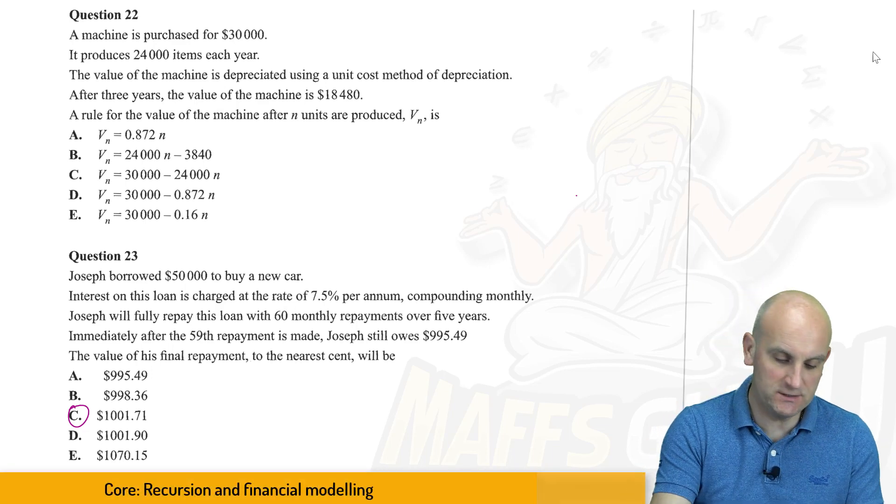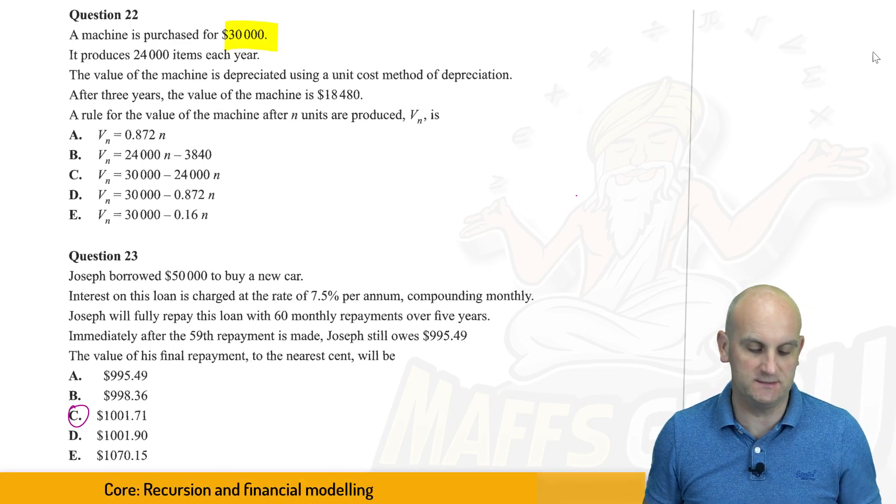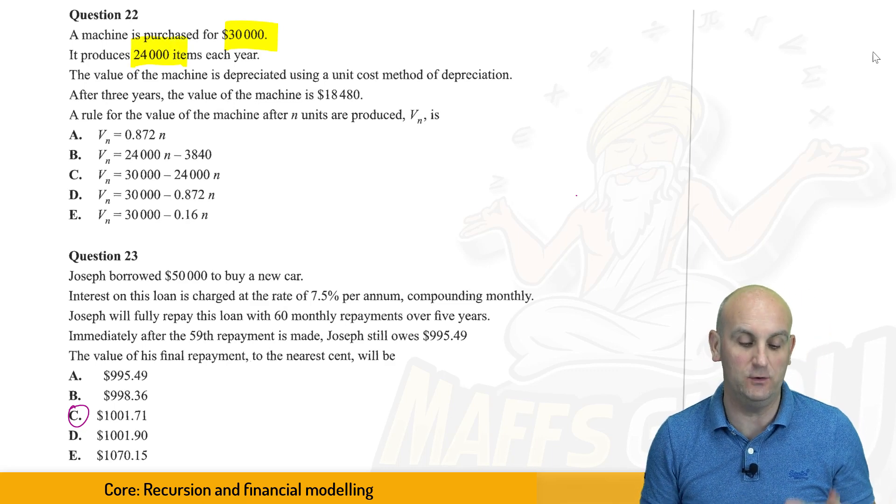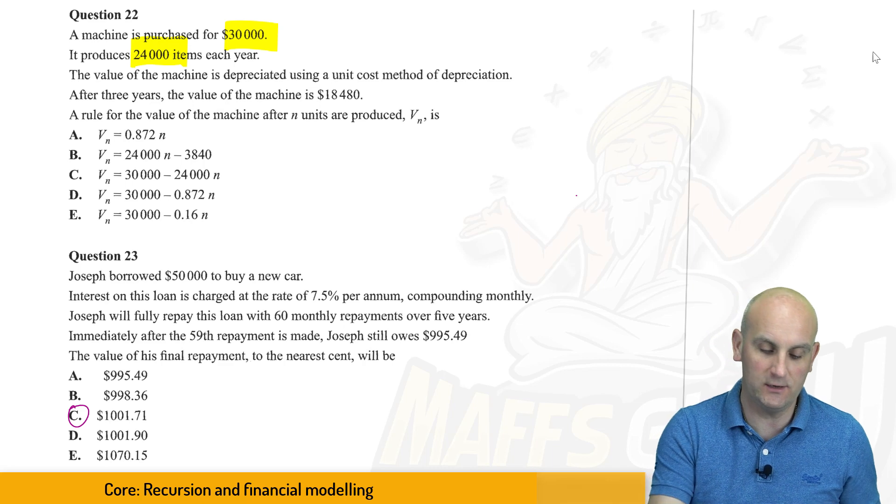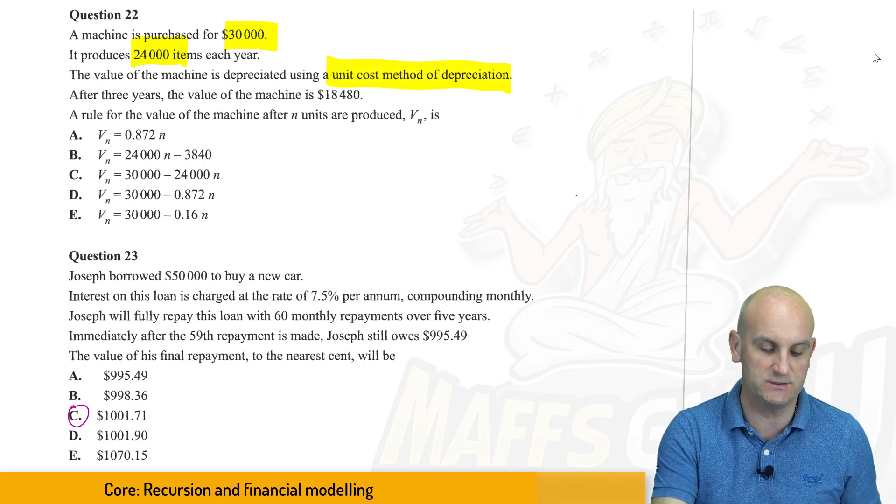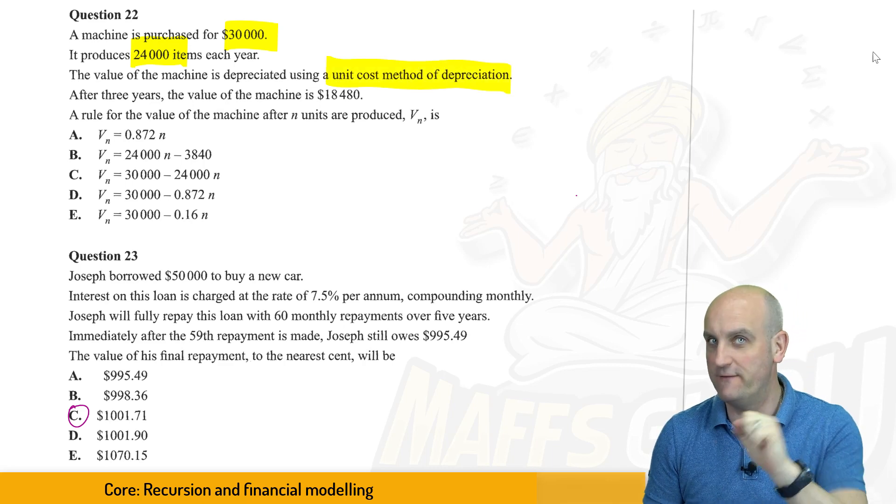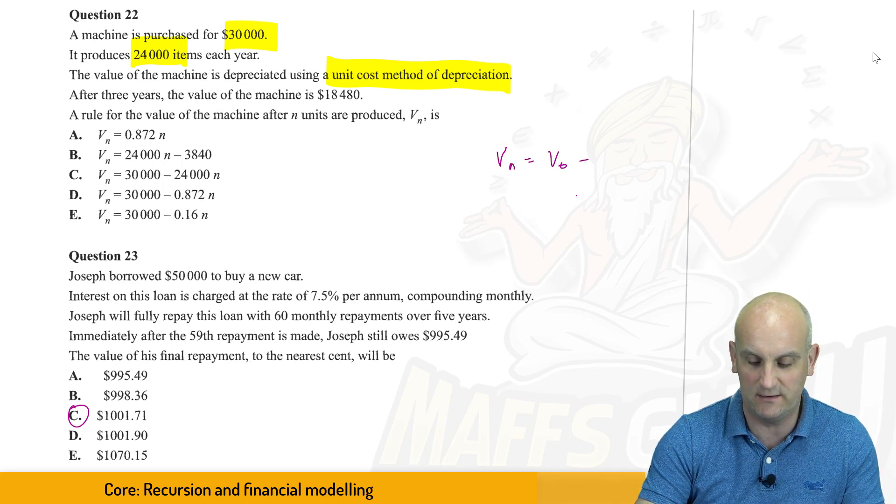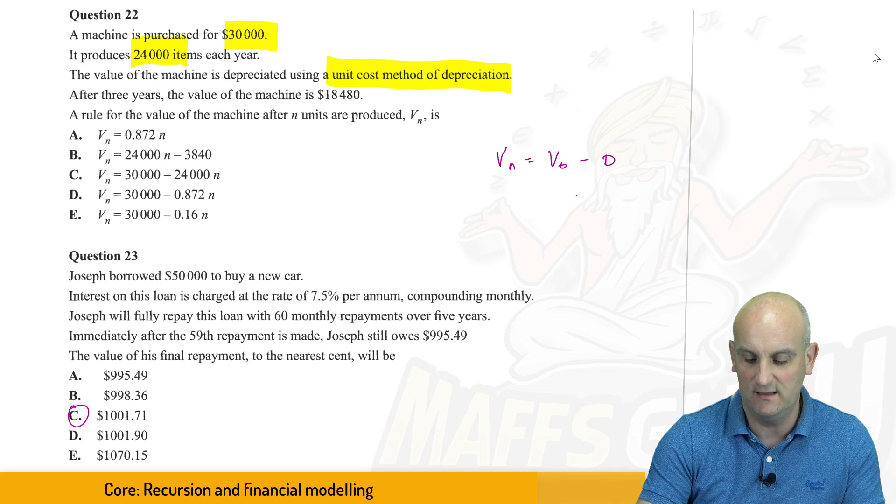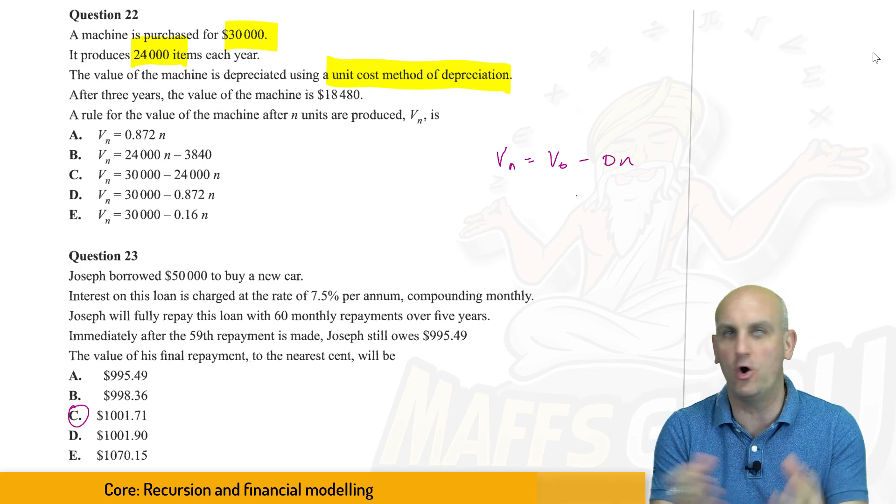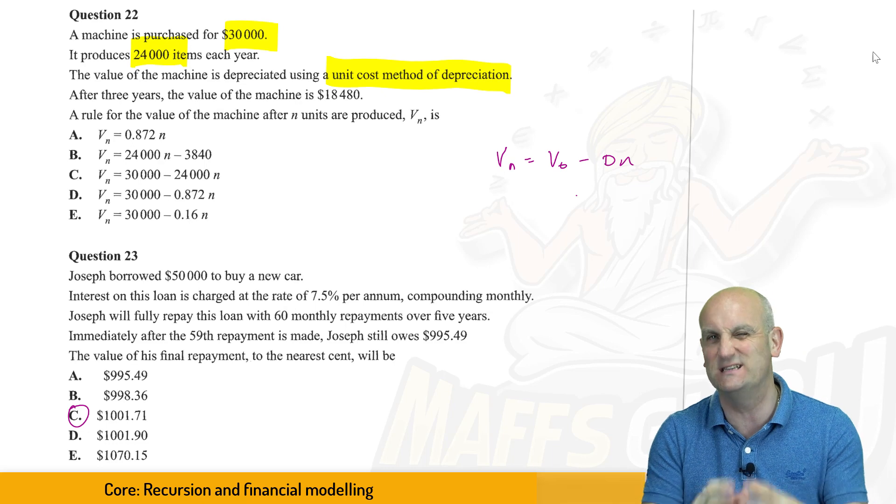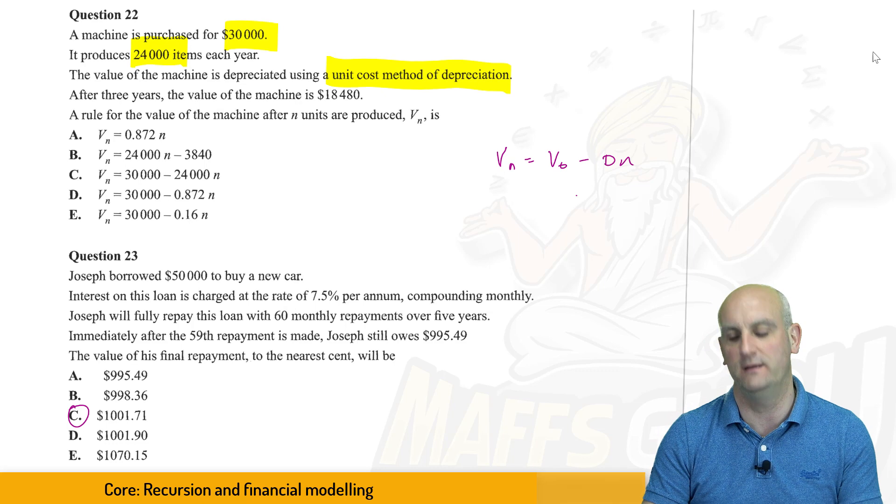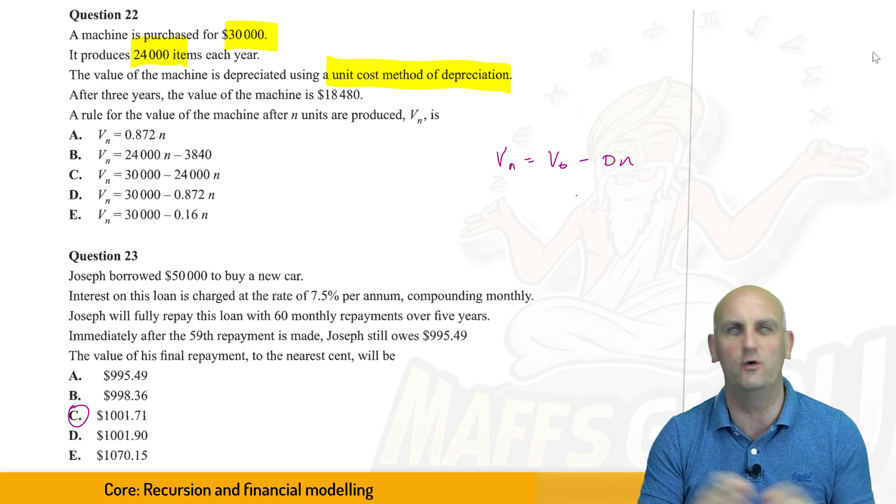Okay, question 22. A machine is purchased for $30,000. It produces 24,000 items each year and the value of the machine is depreciated using a unit cost method of depreciation. So I already have an idea that my formula is going to be something along the lines of VN is equal to V0 minus D times N, where N is this number of items or units, D is the depreciation constant or multiplier, V0 is my initial and VN is my final or the cost.